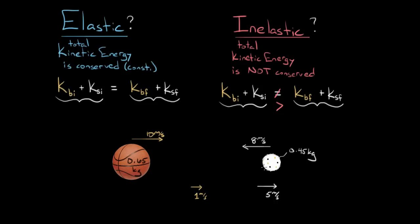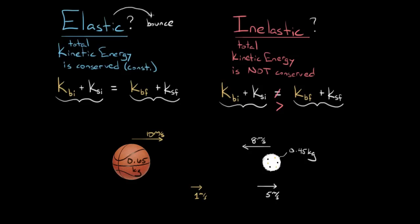One mistake people make is they say: oh, they bounced off of each other, because the basketball is going to the right at 1 meter per second and the scoop of ice cream is going to the right at 5 meters per second — they must have bounced off of each other. Doesn't that mean elastic? No, that doesn't mean elastic. Just because they bounce does not imply that it's elastic. If it's elastic, they do have to bounce off of each other, but just because it bounces does not mean it's elastic.